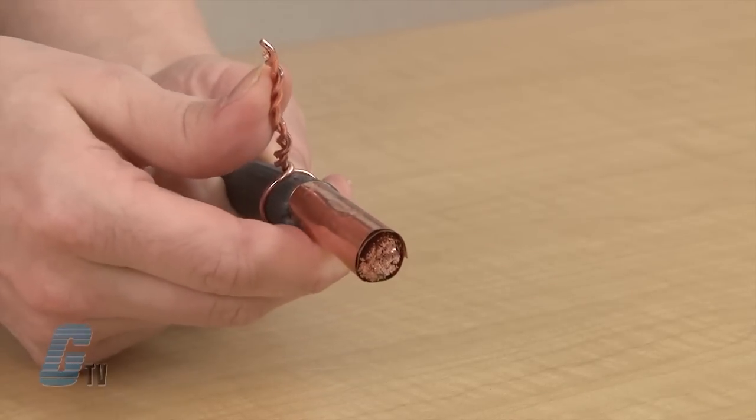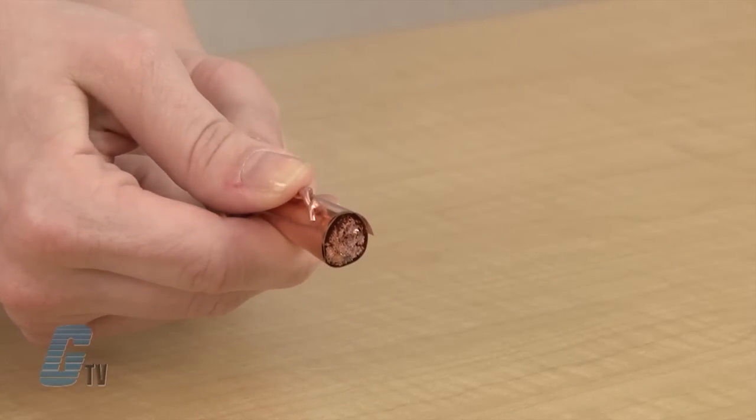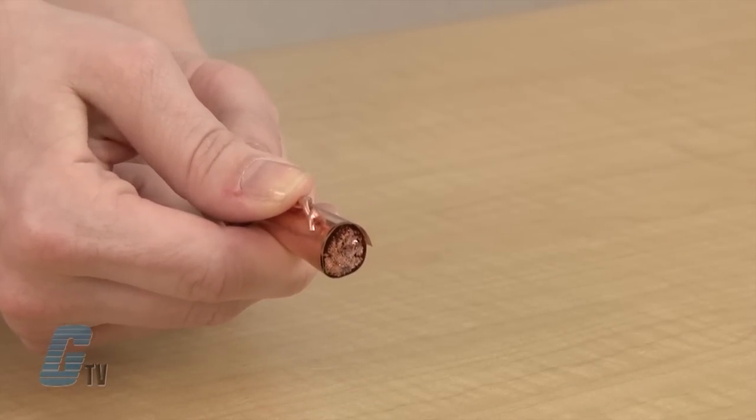Then I can bend the wire parallel to the cable and trim the wire so that it is flush with the cable.